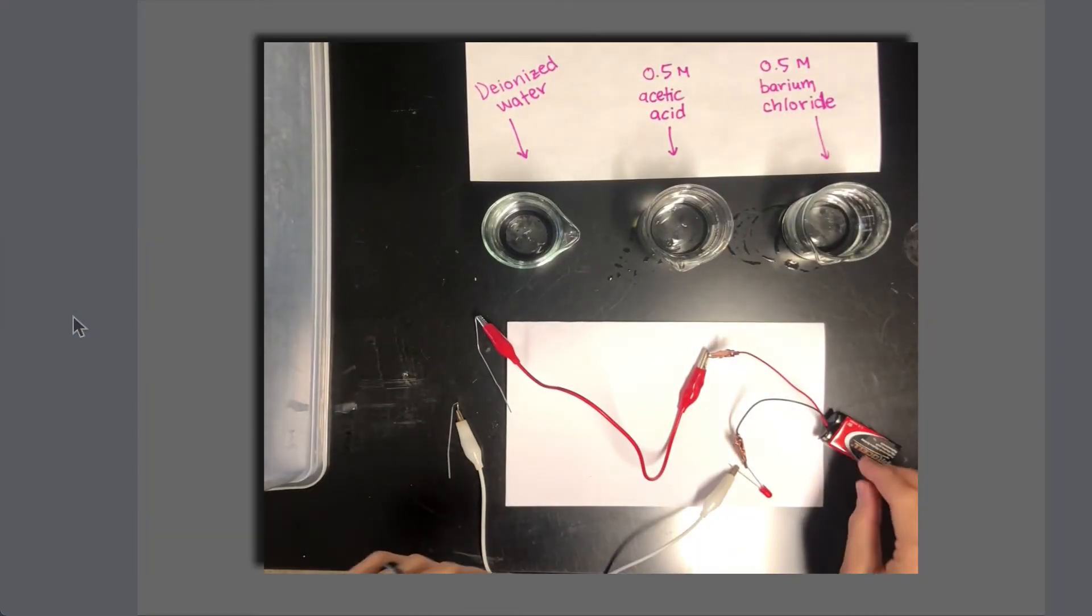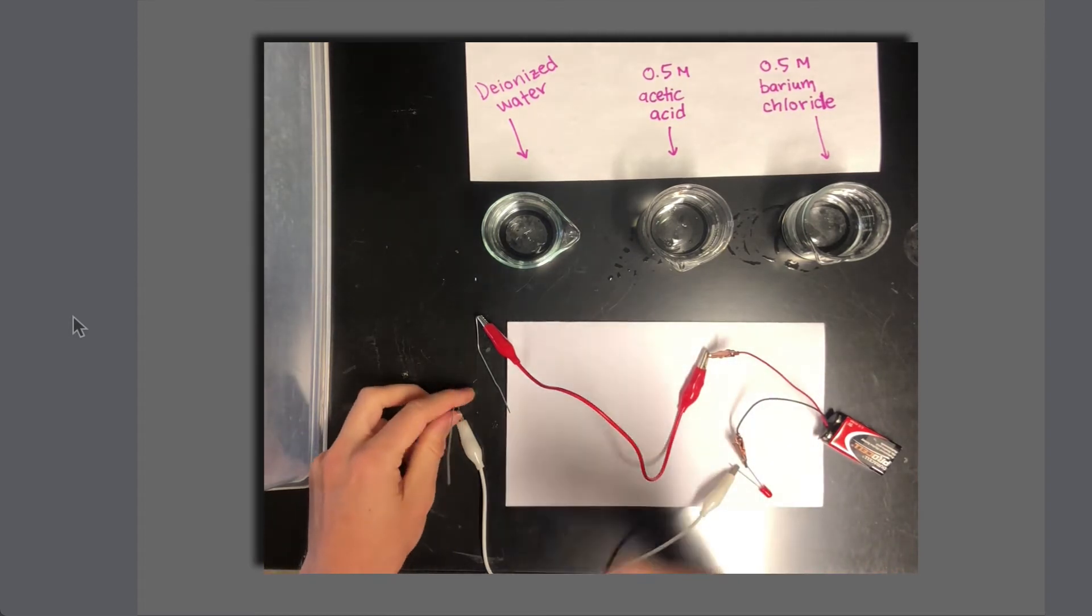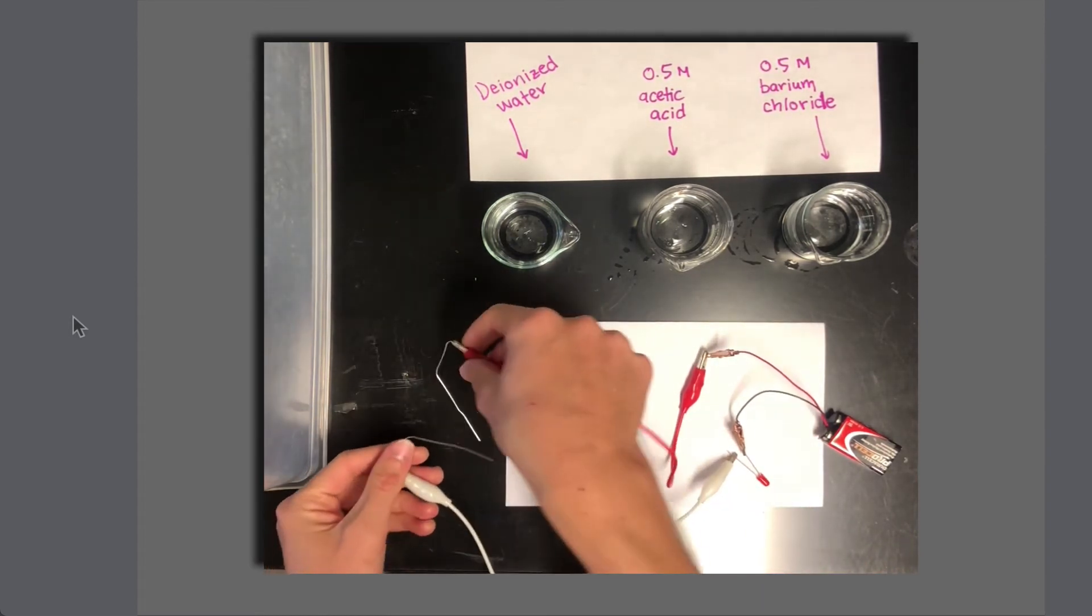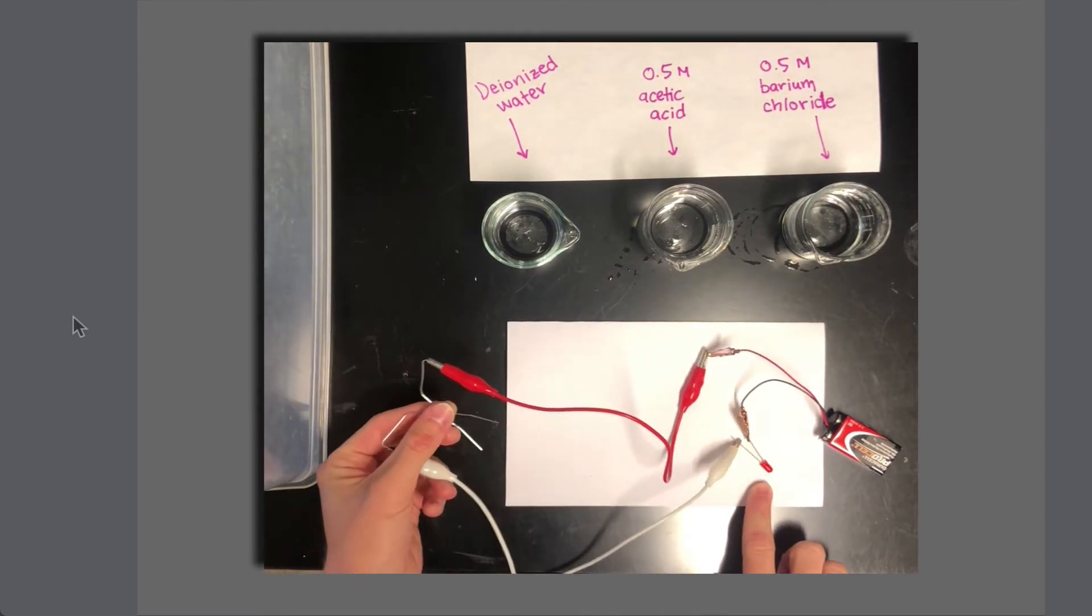I have here a 9-volt battery that is connected in a very small, very simple circuit to a light-emitting diode. And although this may be difficult to see with the lights on, if I connect these two leads to one another, the LED lights up.